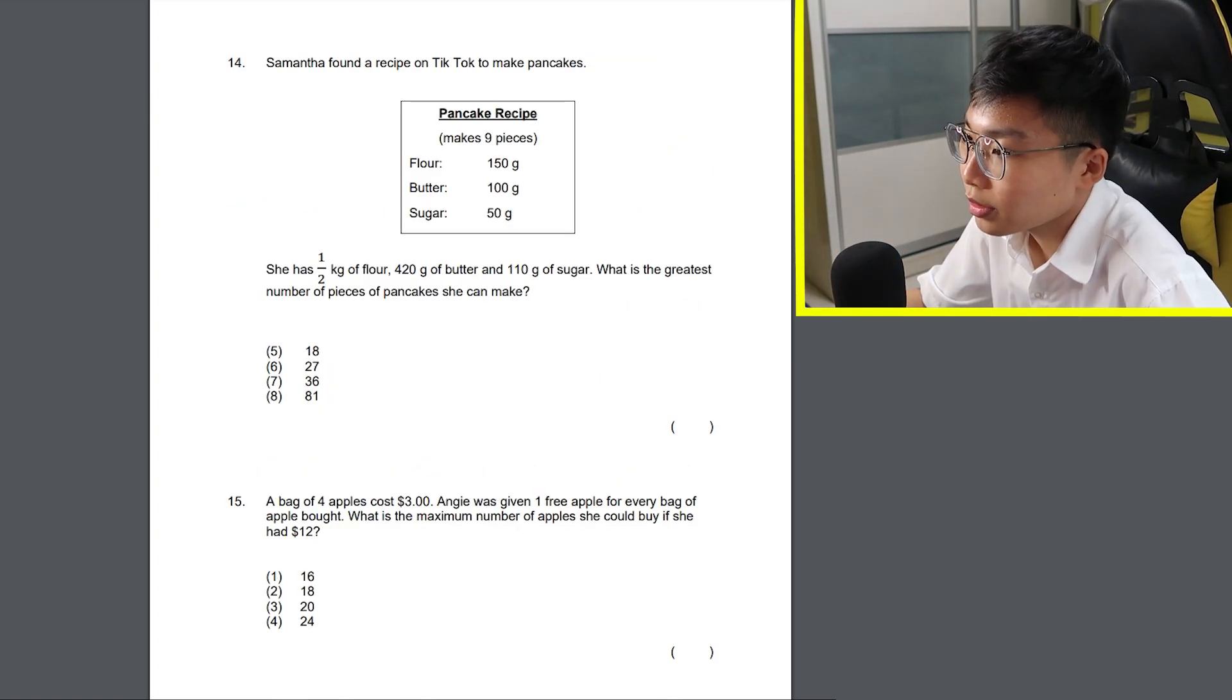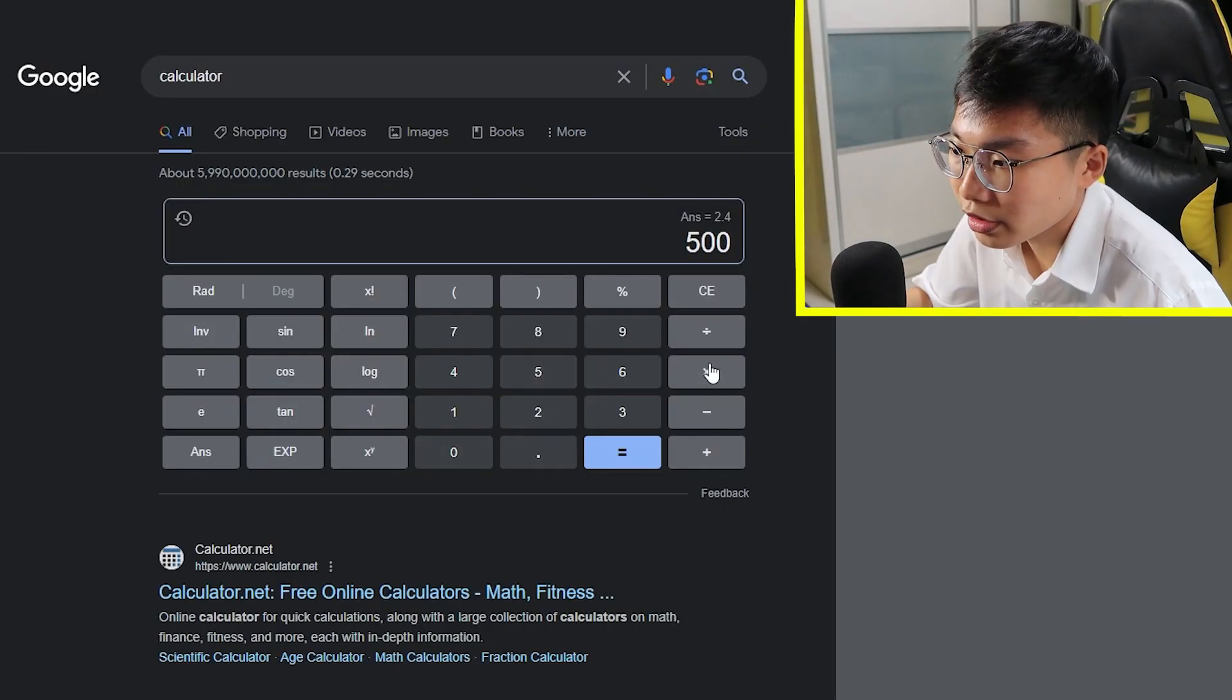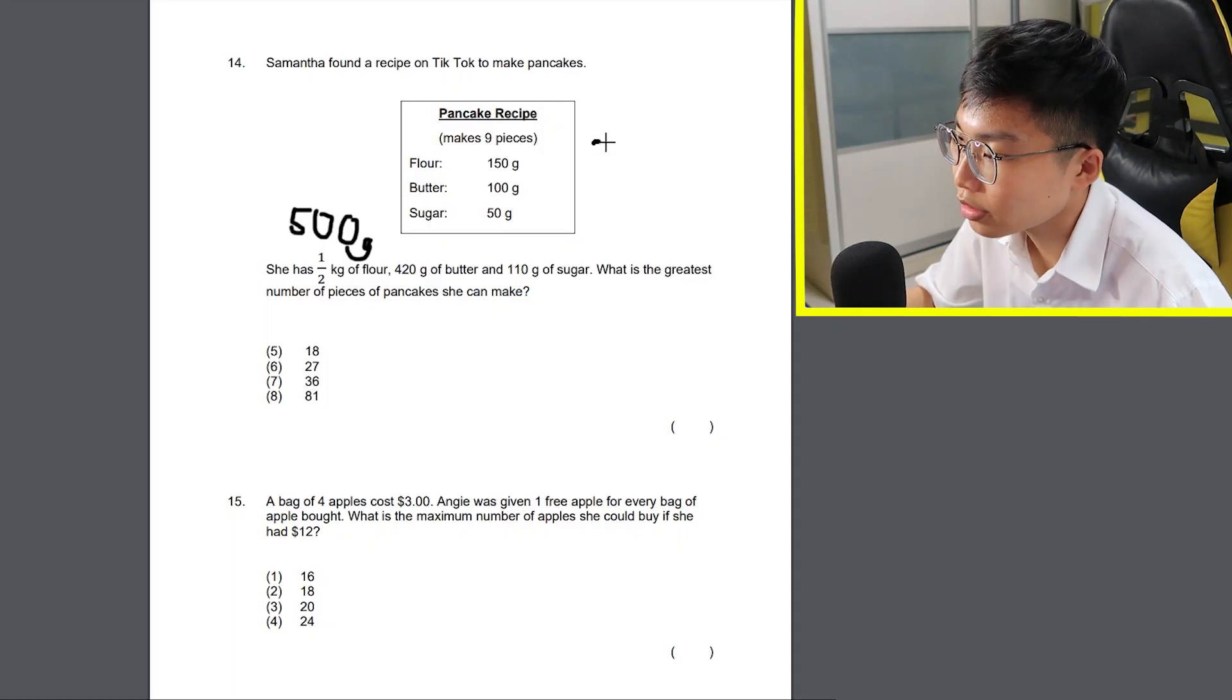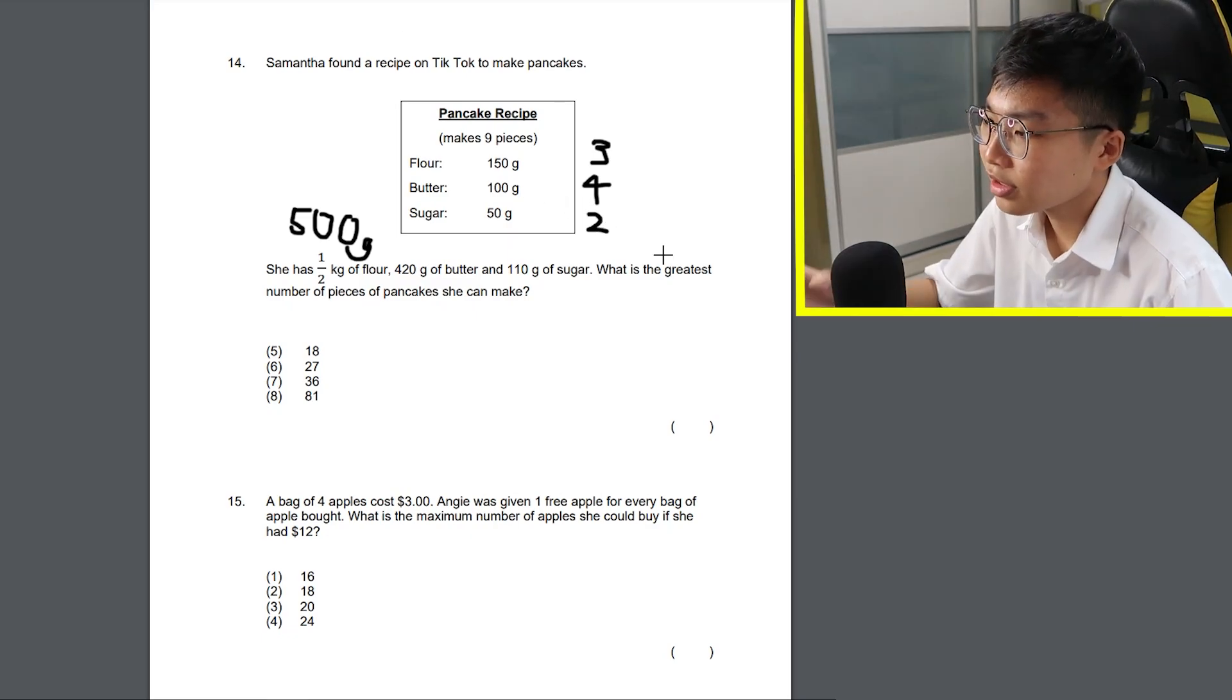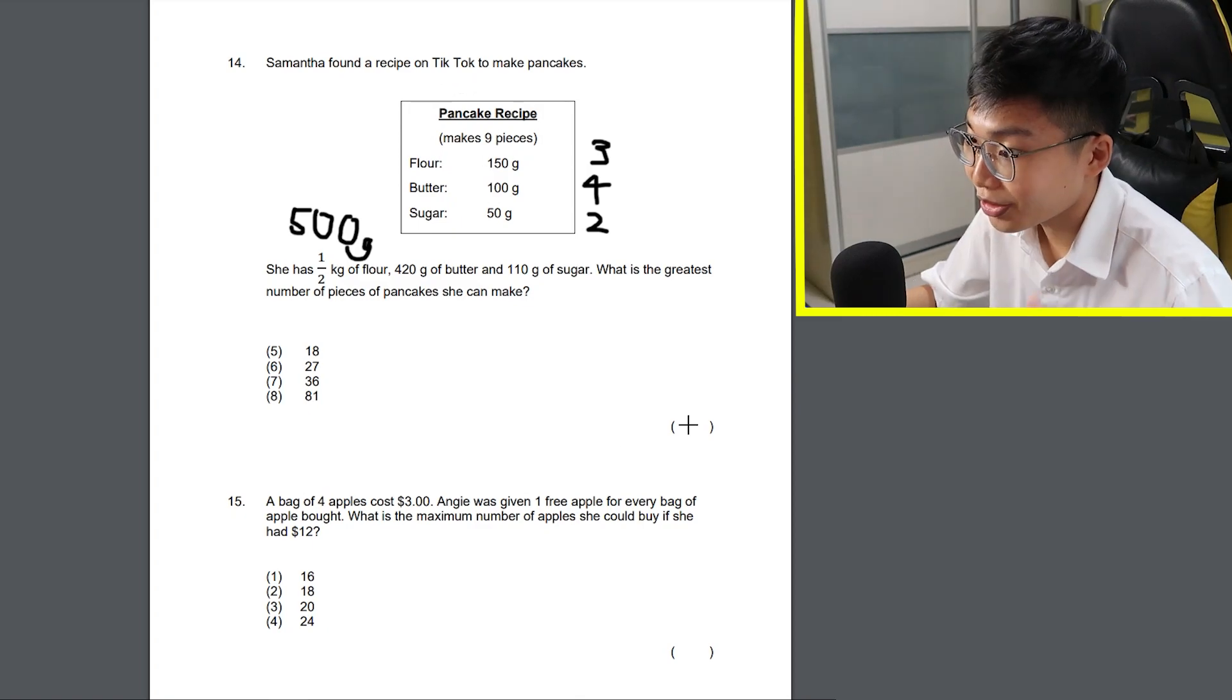Samantha found a recipe on TikTok to make pancakes. She has half a kg of flour, 420 grams of butter and 110 grams of sugar. What is the greatest number of pieces of pancakes she can make? Okay, I can do this. Half a kg is 500 grams. So 500 divided by 150 is about 3. 420 divided by 100 is about 4. 110 divided by 50 is about 2. So realistically, she can only make this twice. And each recipe makes 9 pieces. So it's got to be 18 then.